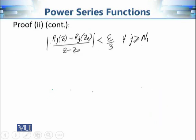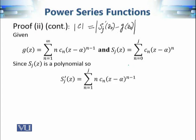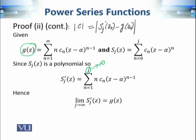The modulus of C equals |s_j'(z₀) − g(z₀)|. Recall that g(z) is the series from n=1 to infinity, and s_j(z) is the polynomial comprising the first j+1 terms of f(z). Since s_j(z) is a polynomial, its derivative is obtained by differentiating each term; note we start from n=1 because the first term is a constant. As j approaches infinity, s_j'(z) is simply the definition of g(z).